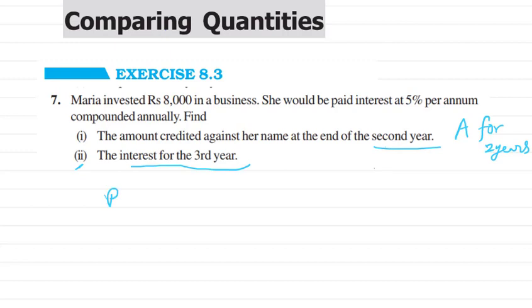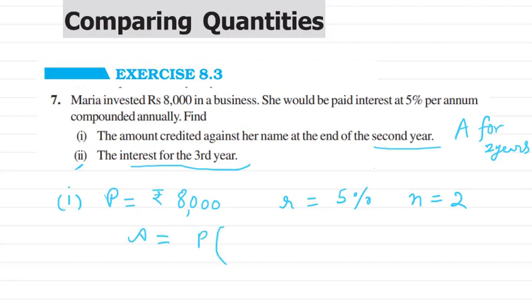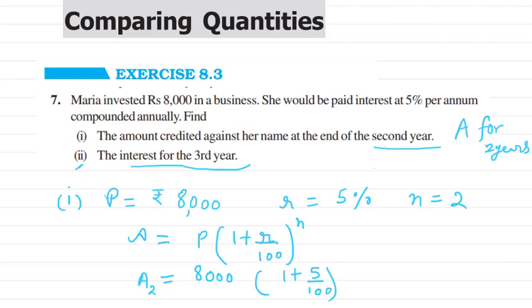For the first part, our principal P is rupees 8,000, R is 5%, and it is compounded annually so you don't have to change anything. Here n will be 2 for the first part. For finding the amount, you can simply put the values in the formula for compound interest: A = P × (1 + R/100)^n. So the amount will be calculated for 2 years.